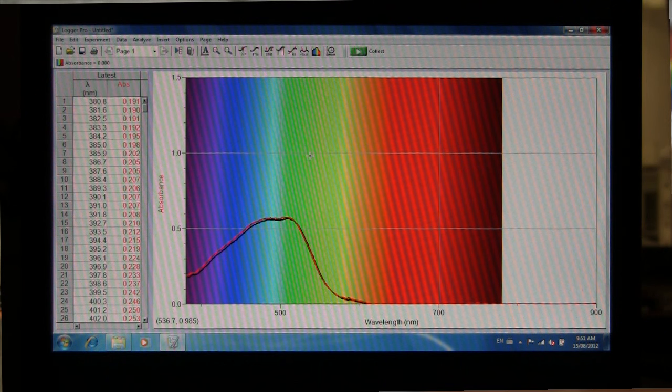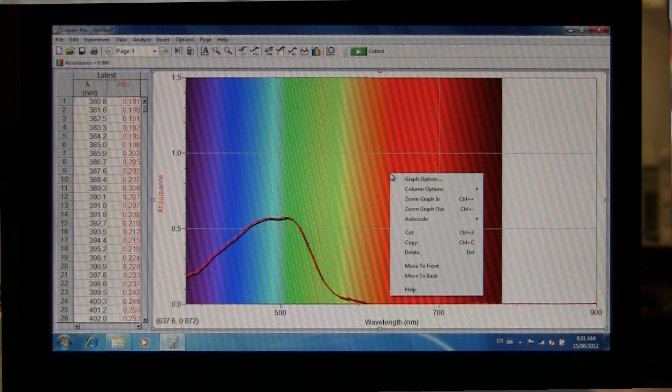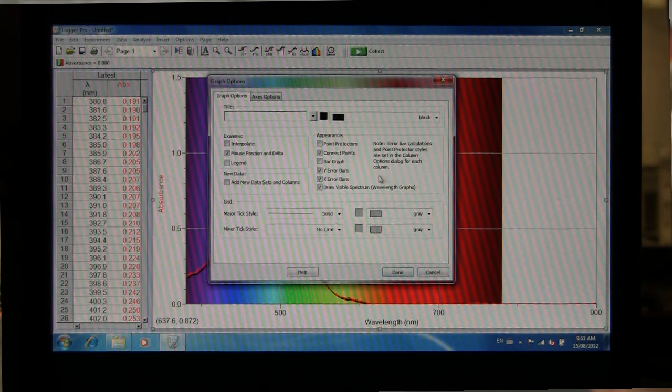If you want to make it a little bit clearer you can do various things like take out the rainbow part of the spectrum by right clicking the graph and go into Graph Options and uncheck Draw Visible Spectrum.